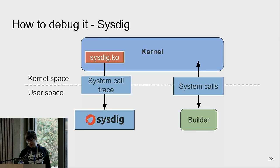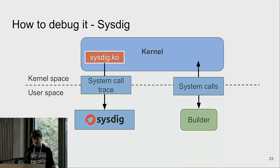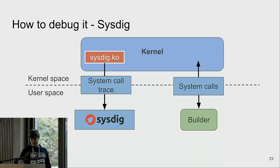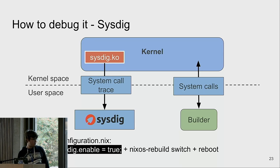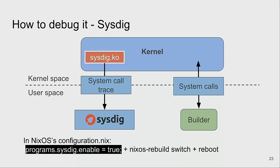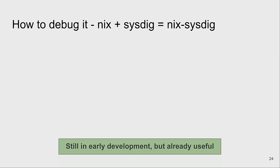Sysdig feels like a tcpdump for system calls — you can save trace files and filter on system calls, for example restricting to only those related to opening a certain file. When we record failing builds we can replay them. We can add heuristics because builds usually fail for similar reasons, so we can give users better hints. To use sysdig, you enable a module, switch configuration, and reboot because it requires loading a kernel module.